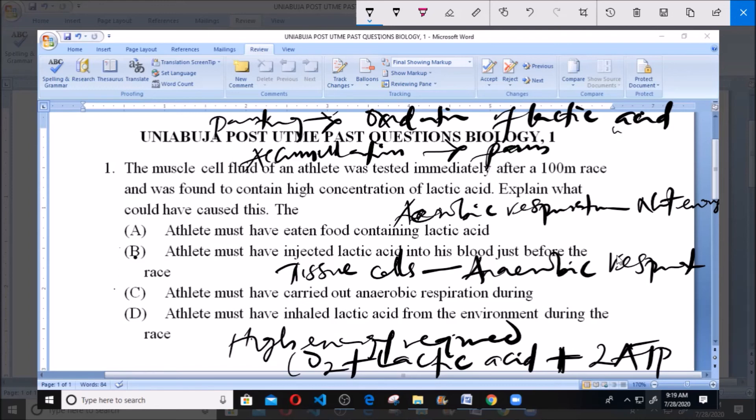So now, if an athlete was tested and the muscle cell fluid was found to contain high concentration of lactic acid, it is due to anaerobic respiration in the muscle cell. The answer is C: Athlete must have carried out anaerobic respiration. This is the answer to this particular question.